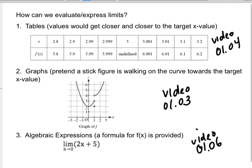How can we evaluate or express limits? We could see limits as tables where values get closer and closer to a target value. In this case, 3 is that value in the middle. The table gets really close to 3. It starts at 2.8, then 2.9 is a little closer to 3, and 2.99 is even closer to 3, and 2.999 is even closer to 3.